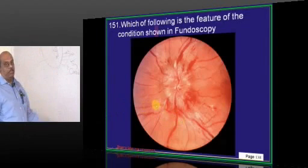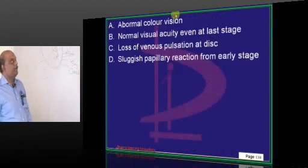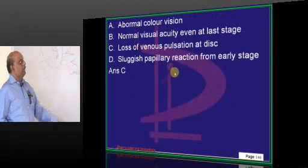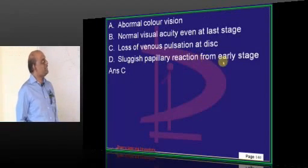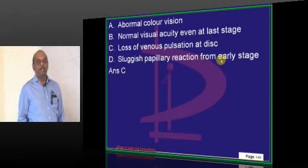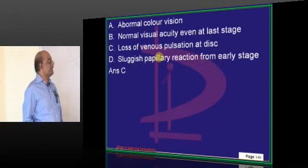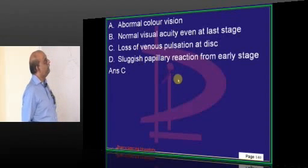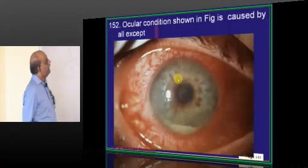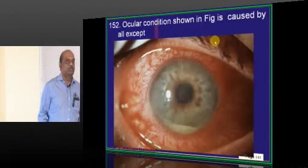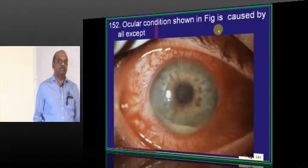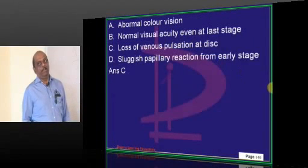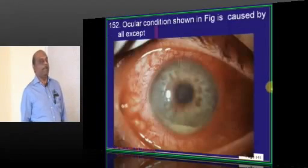On fundoscopy you see papilledema. In papilledema there is loss of venous pulsations at the optic disc — that is what you have to basically remember. Color vision is normal in papilledema.